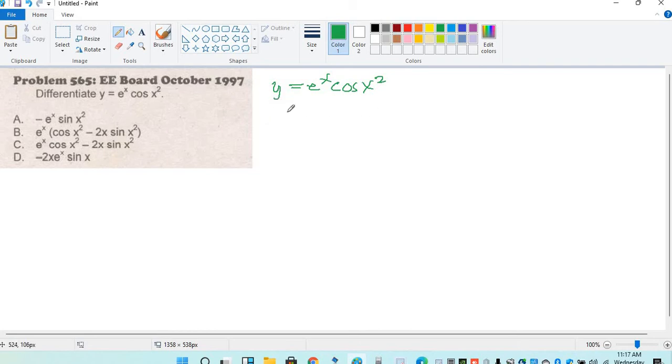derivative of y with respect to x is equal to, so copy mo yung e raised to x. Then, derivative netong cos x squared, so magiging siyang negative sine x squared. Then, derivative netong sa loob, so derivative ng x squared is 2x.